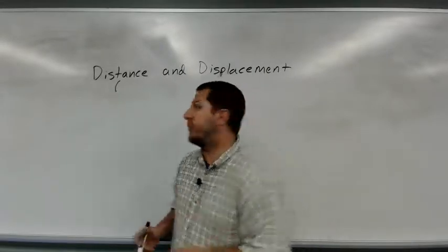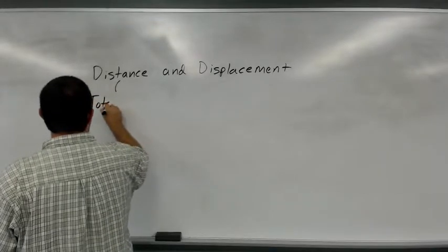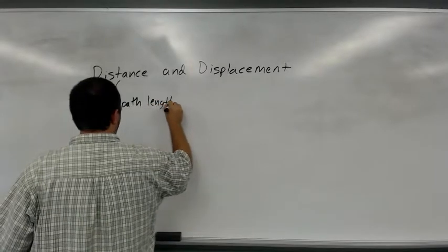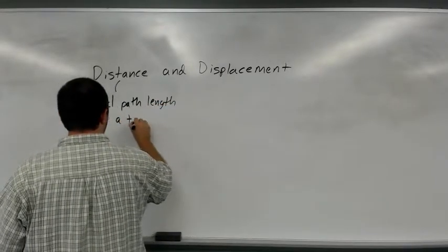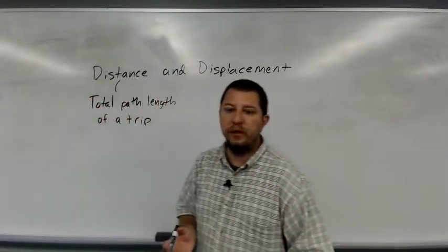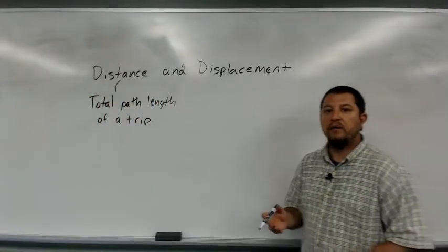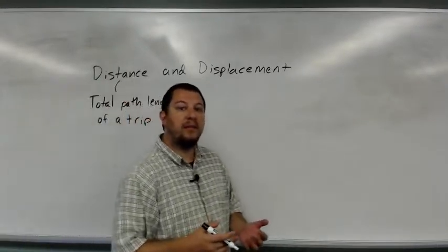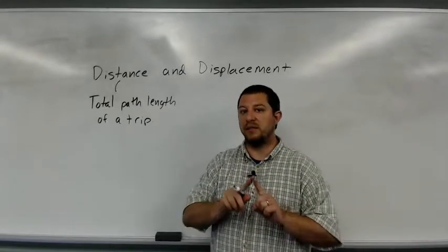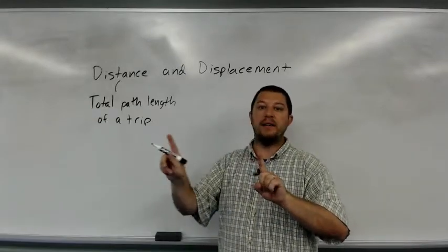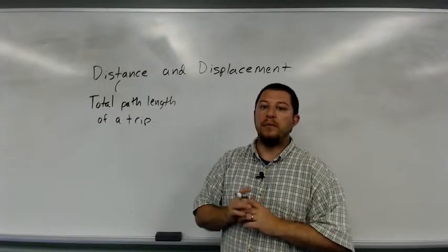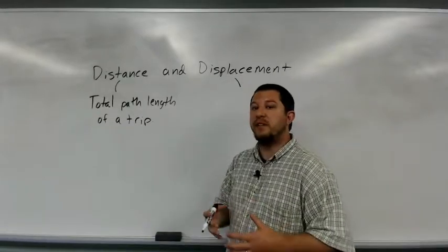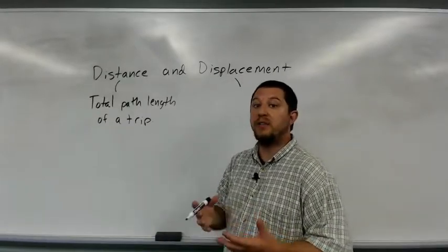Distance we can think of as just the total path length of a trip. Suppose I start over here and walk a few steps this way, and then walk a few steps back this way — the total distance traveled is the sum of the distance this way and then the distance back. Displacement, on the other hand, is just the difference between your ending and starting points.